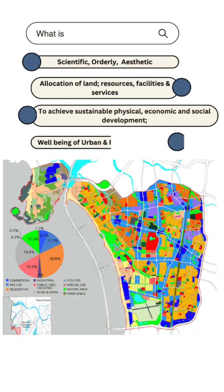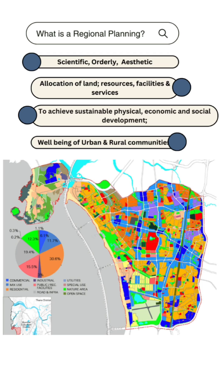Now that we understand what a region is, let's move on to what is regional planning. Regional planning is the scientific, orderly, and aesthetic allocation of land, resources, facilities, and services to achieve sustainable physical, economic, and social development, ensuring the well-being of both urban and rural communities.